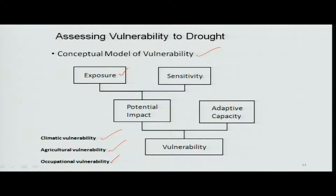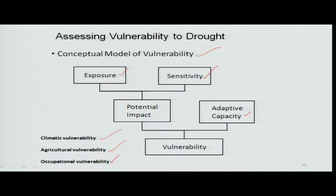Sensitivity is when there is going to be a slight change in temperature or in rainfall conditions and the crop is very sensitive to that change. Adaptive capacity is how, with all these deviations in weather parameters, people are able to cope up with the losses, or cope with reduced outputs or reduced crop yield.